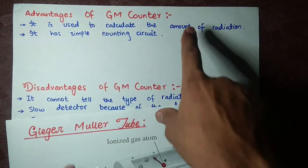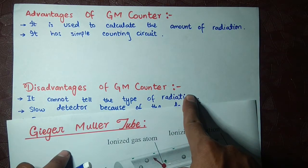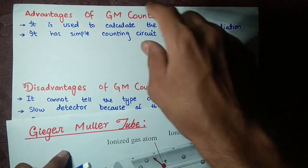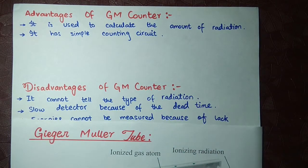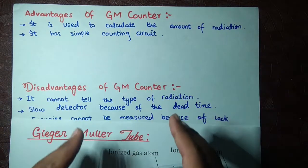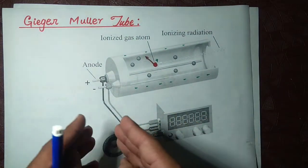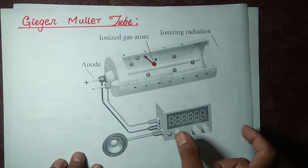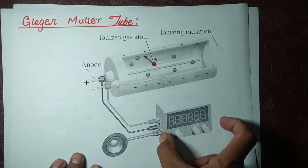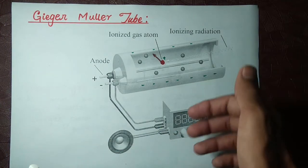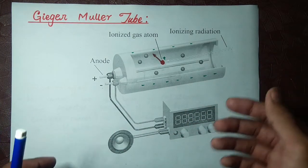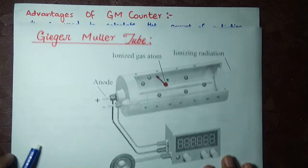So we can calculate the amount of radiation but not the type. Another main advantage of the GM counter is that it has a simple counting circuit. It is not very complicated; its interface is so simple — you can reset with a button, change the scale, and easily read the number of radiation events.